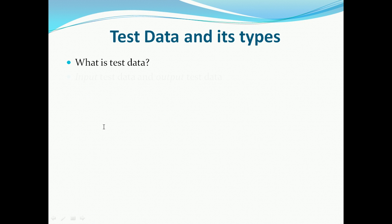So we can say that test data is of two types. One is the input test data — the data that we enter into the system, that we type or somehow enter into the system. And the output test data is what we are expecting the system to provide us. So the test data can be input test data or output test data.